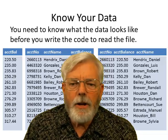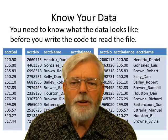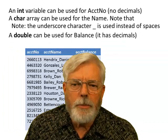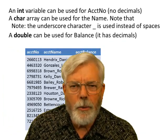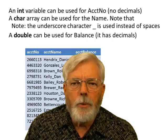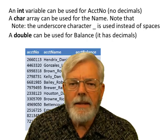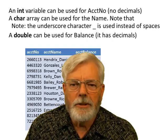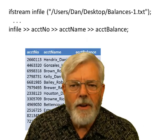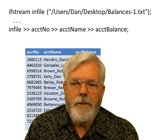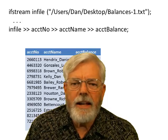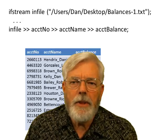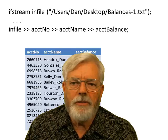If I have account number, account name, and account balance, I can use an integer for the account number since there are no decimal places. I can use a character array or string to read the account name, and then use a double for the account balance since it has places past the decimal. I can open the file using ifstream — input file stream — with the object named infile.